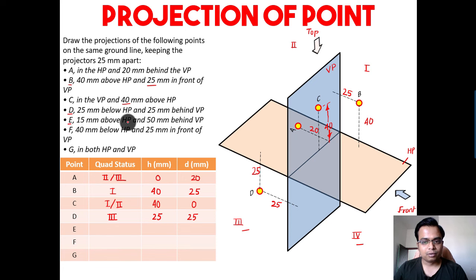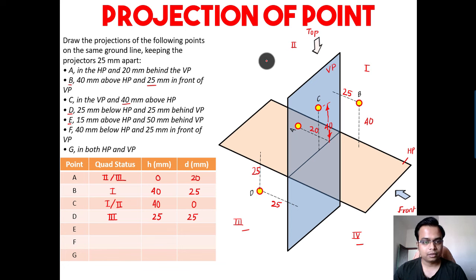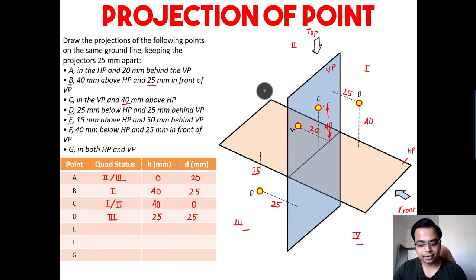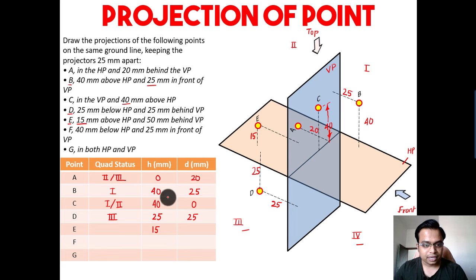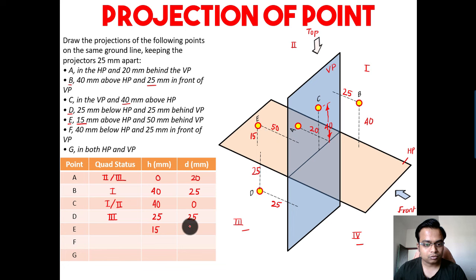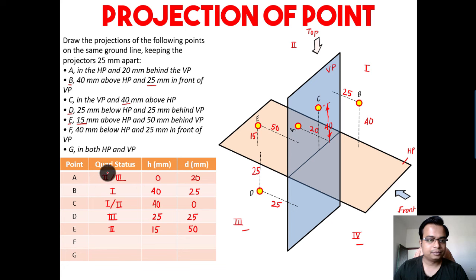Point E: 15mm above the HP and 50mm behind the VP. Above HP could be first or second quadrant. Behind the VP means it's the second quadrant. So h equals 15 — that's the distance above HP — and d equals 50, the distance behind the VP. Clear-cut case of a point in the second quadrant.